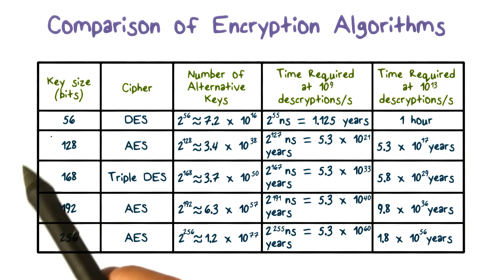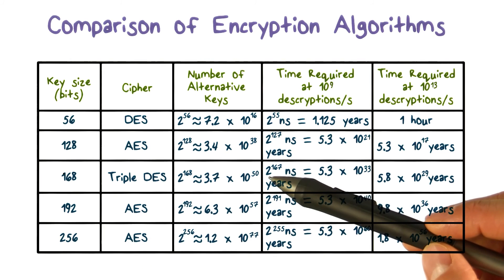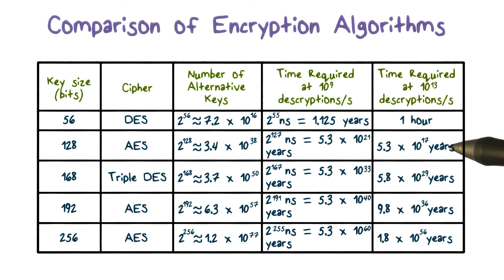Key sizes of 128 bits or greater are effectively unbreakable using simply brute force method. For example, even with a supercomputer, it would take 10 to the 17 years to try all the possible keys used in AES.